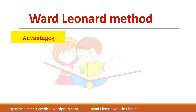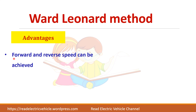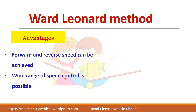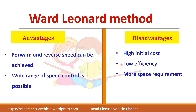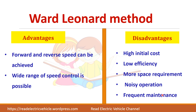There are some advantages as well as disadvantages of this method. By changing the field winding of the DC generator, you can easily achieve forward and reverse speed, and a wide range of speed control is possible. But the disadvantages are high initial cost, because to control the speed of one motor you need two more motors, which increases total cost. At every stage there will be losses, so efficiency will be lower, and this arrangement requires more space, produces noise, and needs frequent maintenance.